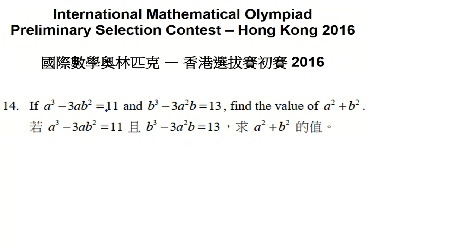We are gonna solve this problem from Hong Kong with a new idea. It says if a³ - 3ab² = 11 and b³ - 3a²b = 13, find the value of a² + b².